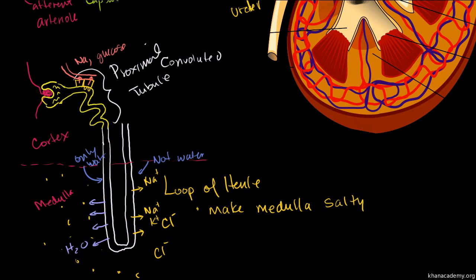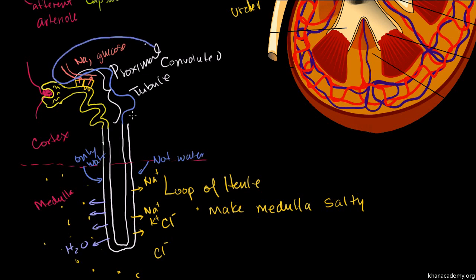After the loop of Henle, we're almost done with the nephron. Then we're in another convoluted tubule — and you might guess the name. If this was the proximal one, this is the distal one: the distal convoluted tubule. It actually passes very close to the Bowman's capsule. Distal means further away, it's convoluted, and it's a tubule — the distal convoluted tubule.